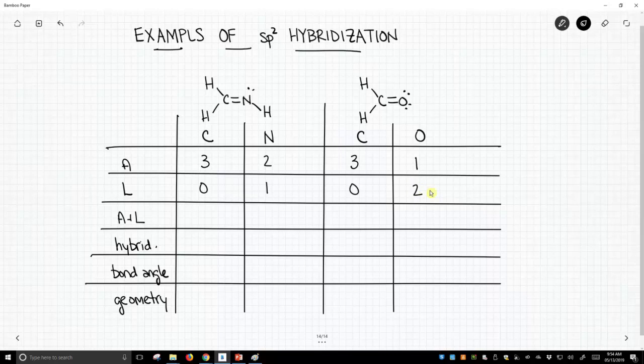So what are our A plus L values? All the way across we're going to have threes. That's because these are all sp² hybridized atoms.